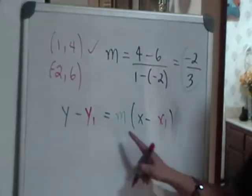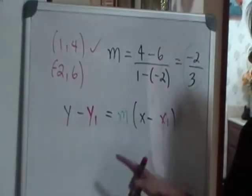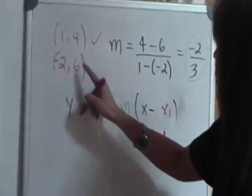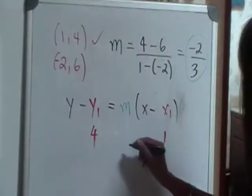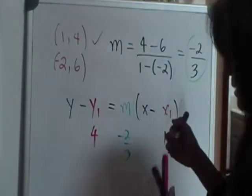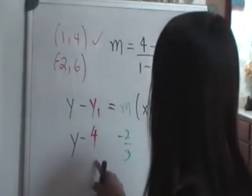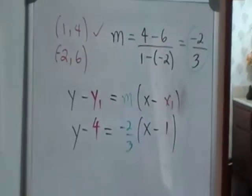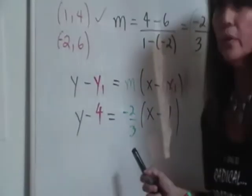So all we have to do is replace these guys, x sub 1, y sub 1, and m by their values. So here we have x sub 1 is 1, y sub 1 is 4, and we calculated our m to be negative 2 thirds. So I have y minus 4 equals negative 2 thirds times the quantity x minus 1. So there's our starting equation where we use the point-slope form.